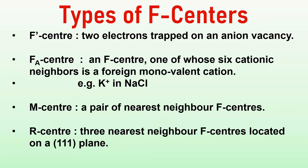Let us go through the types of F-centers. An F-prime centre is an anionic vacancy in which two electrons are trapped. An FA-center is an F-center one of whose six cationic neighbours is a foreign monovalent cation — for example, K⁺ in NaCl. An M-center is a pair of nearest-neighbour F-centers, and an R-center is one with three nearest-neighbour F-centers located on a (1,1,1) plane.